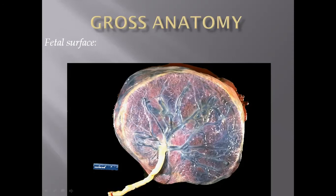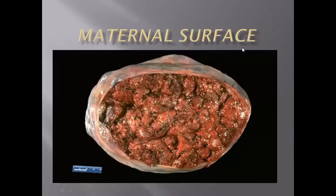On the fetal surface, we can see that it is tan-gray, and histologically it is made up mainly of the primary and secondary villi, which we will discuss further when we cover the histology. On the maternal side, it is mainly composed of the cotyledons, which are tan-red, spongy, and soft tissues.